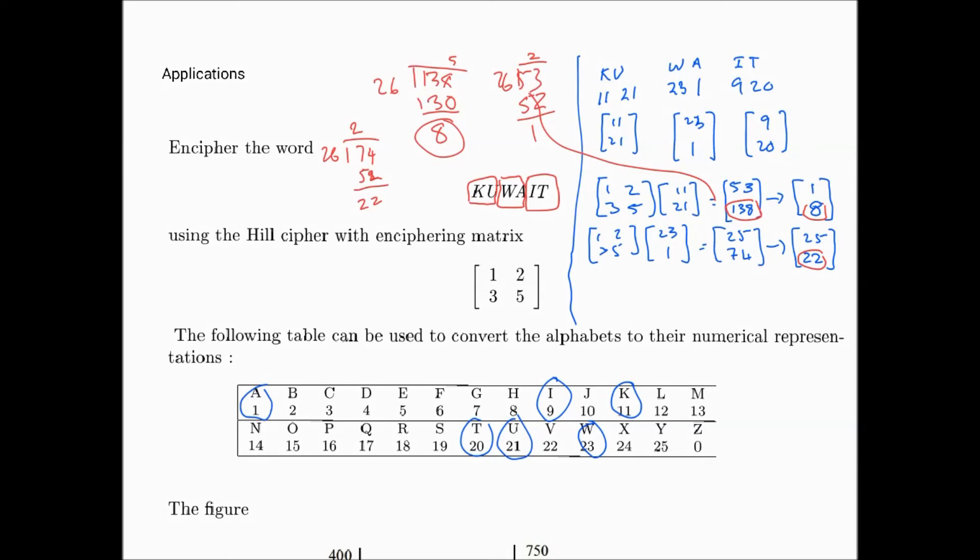The last one that remains is [1 2; 3 5] multiplied by [9, 20]. That gives us 9 plus 40, so 49, and here we have 27 and 100, so 127. That will give us 49 divided by 26, that goes once, and that'll give us 23. The 127, 26 by 4 is 104, so this is 23 again.